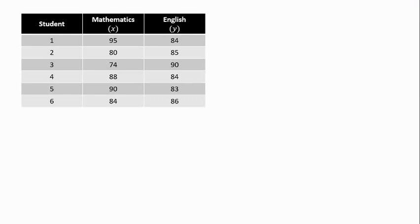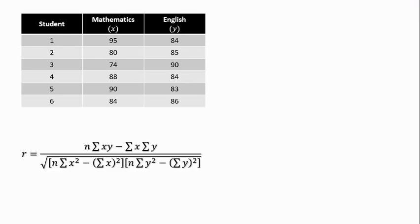So, for example, we wanted to know if there is a correlation between mathematics and English performance of a group of 6 students. Their final grades of those two subjects are shown where mathematics is the independent variable x and English is the dependent variable y.